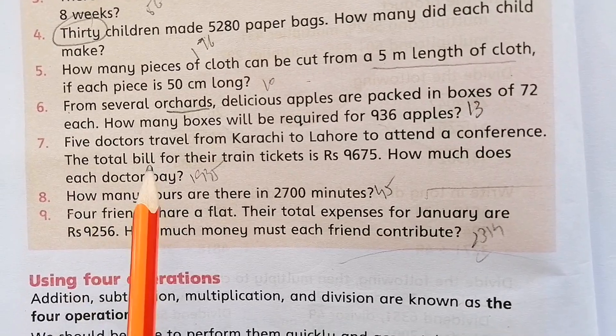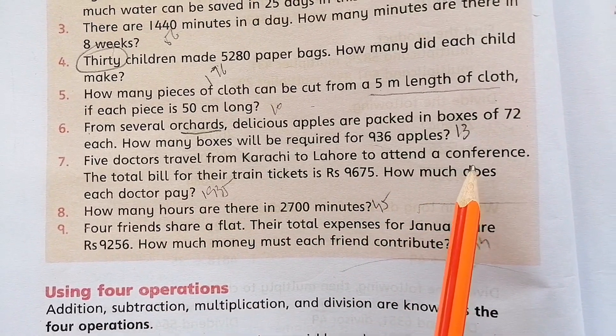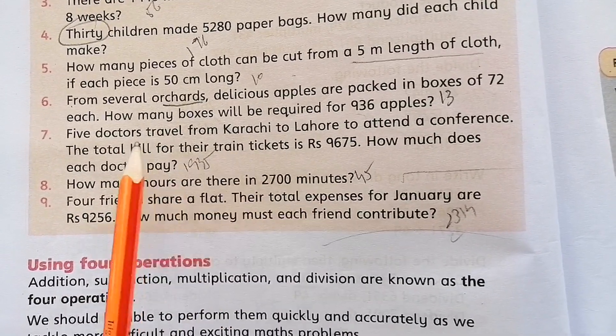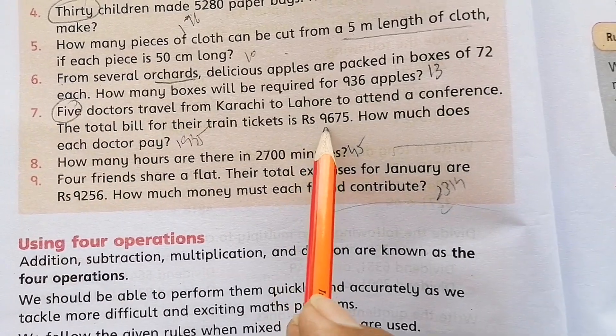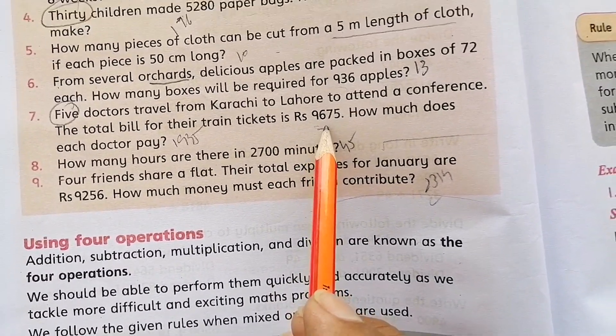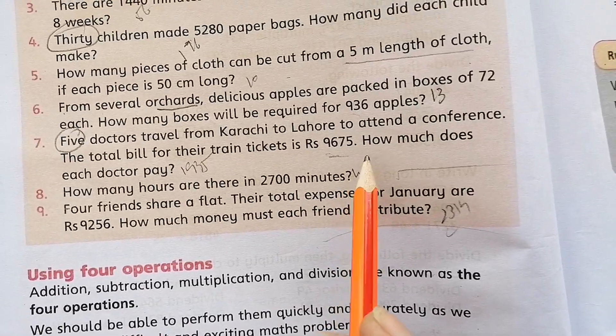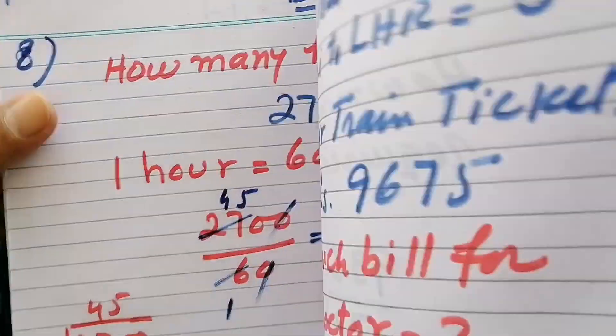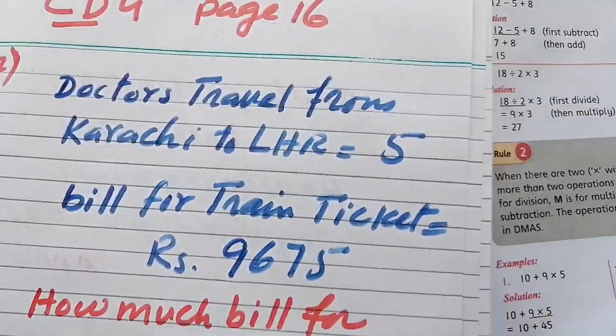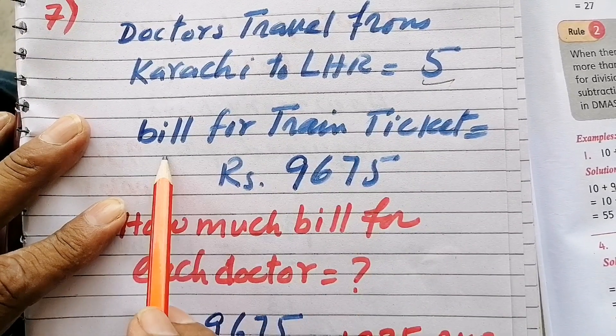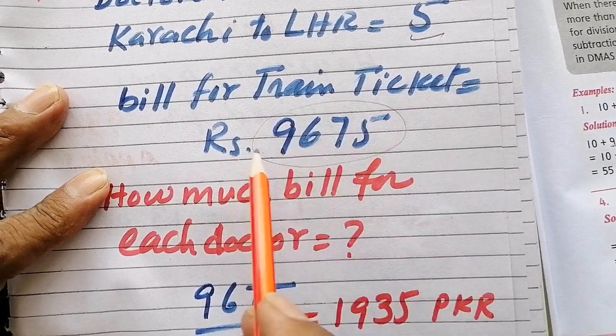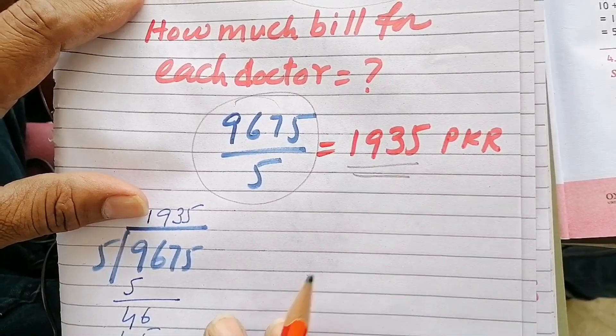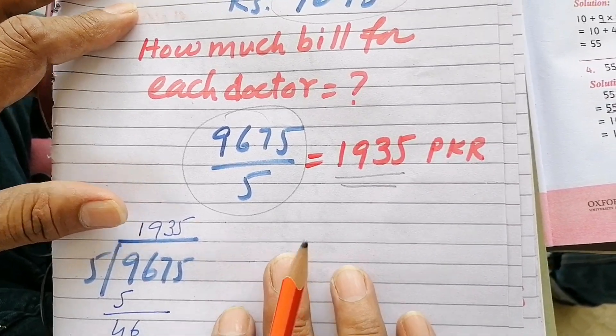Five doctors travel from Karachi to Lahore to attend a conference. The total bill for their train tickets is 9,675 rupees. How much does each doctor pay?